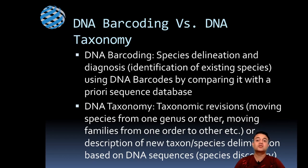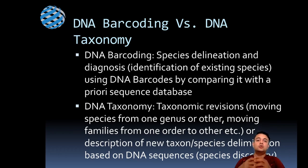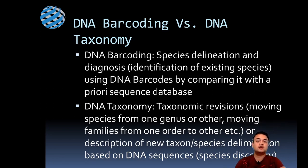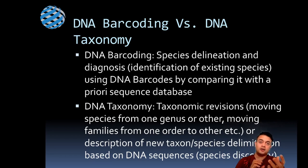DNA barcoding and DNA taxonomy might look similar but there are differences. Barcoding refers to species delineation and diagnosis — diagnosis meaning identification of an existing species. For example, you come across an unknown plant, but it has already been described by someone else and you want to identify it. That is called diagnosis, like disease diagnosis — for example, determining whether a patient has cholera. But if the disease is altogether new, you need a lot of expertise, like with novel coronavirus COVID-19. That is something like DNA taxonomy.